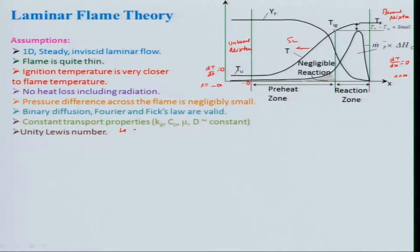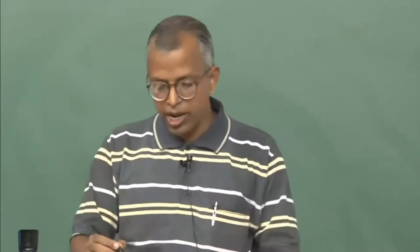We also assume unity Lewis number — Le = α/D, where α = kg/(ρCp) is the thermal diffusivity and D is the mass diffusivity. When Le = 1, the species equation and the energy equation become similar in form, so a solution for one gives the other easily. This is a restricted case — not physically exact — but we will use it for analysis.